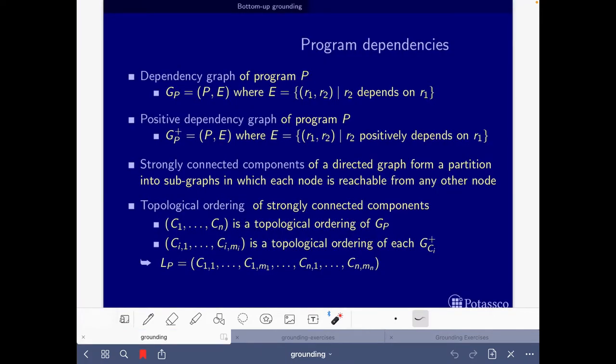So here on the grounding part we have this slide on program dependencies where we have the definition of the dependency graph, the positive dependency graph, and then we have here a reminder what is a strongly connected component. And then we have these definitions of topological order. So first we will have this c1 to cn, which is a topological ordering of the dependency graph of the program.